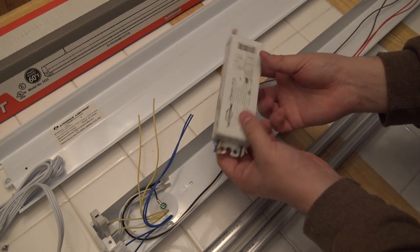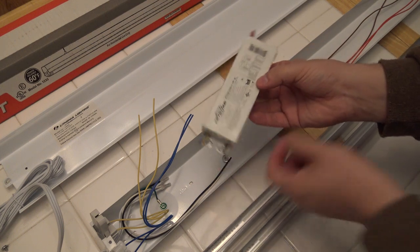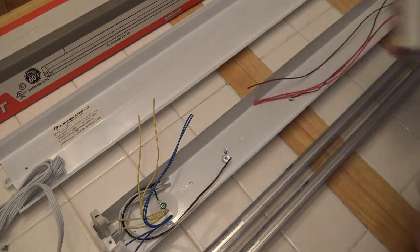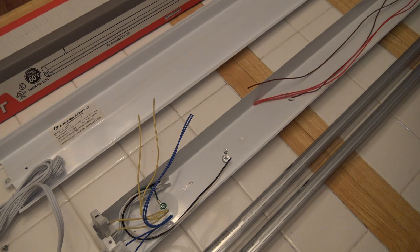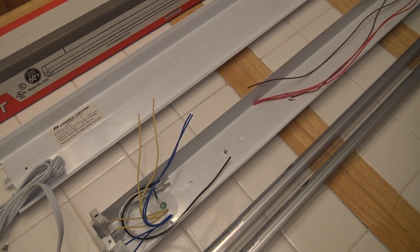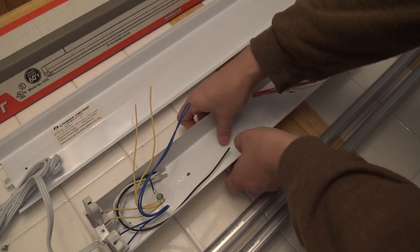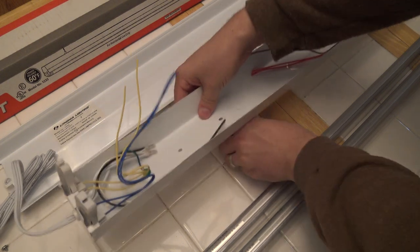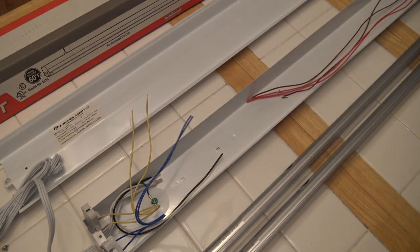All right, so as I said, the first step is to remove the ballast. What we've done here is we've cut every single wire as close as we possibly can to this ballast. And then there's just a screw holding this one in. So I went ahead and popped that off. And then it should just wiggle right out. So that's the ballast.